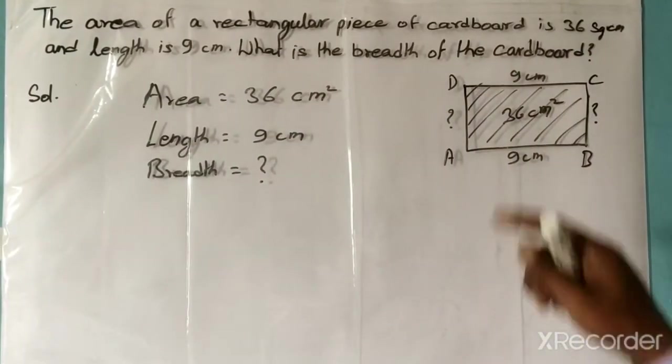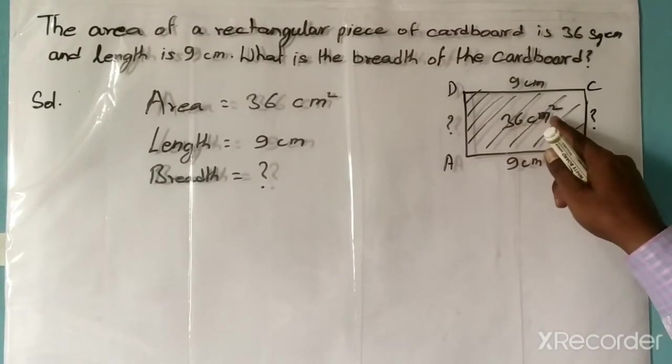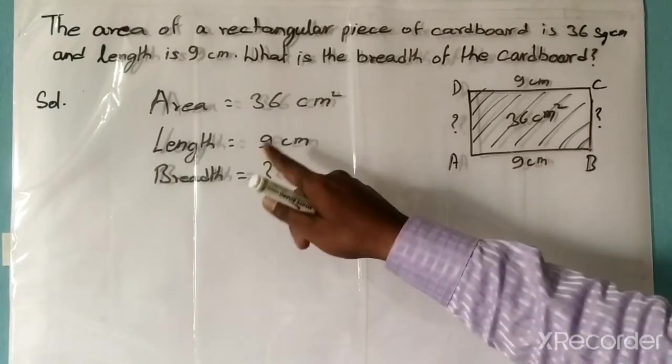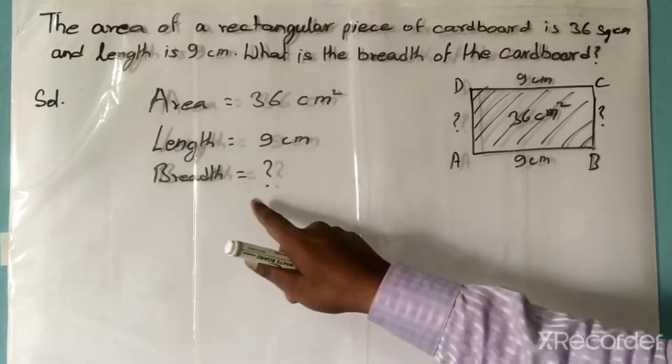In this question, the area is given as 36 square centimeters and length is given as 9 centimeters, but breadth is not given. So we have to find the breadth.